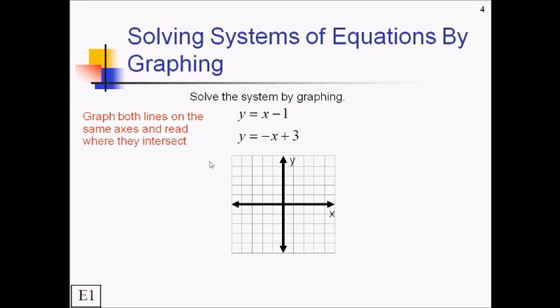All right, let's see how you did. First equation, we have a y-intercept of negative 1 and a slope of invisible 1 here. So up 1, right 1. Draw the line through those.